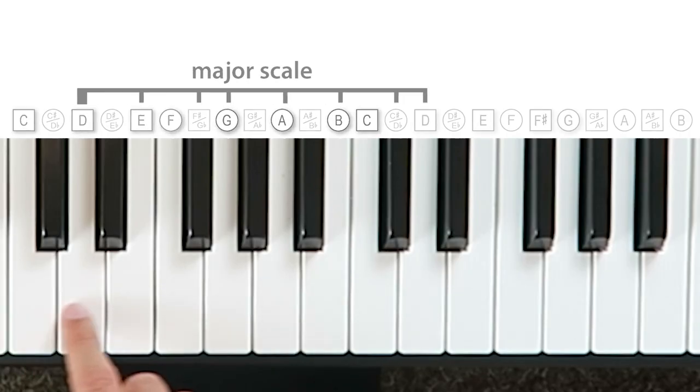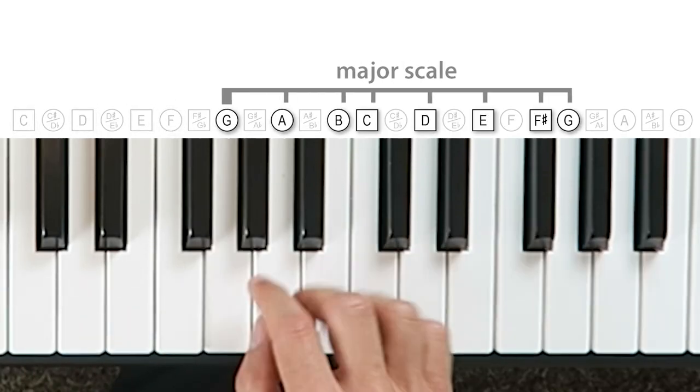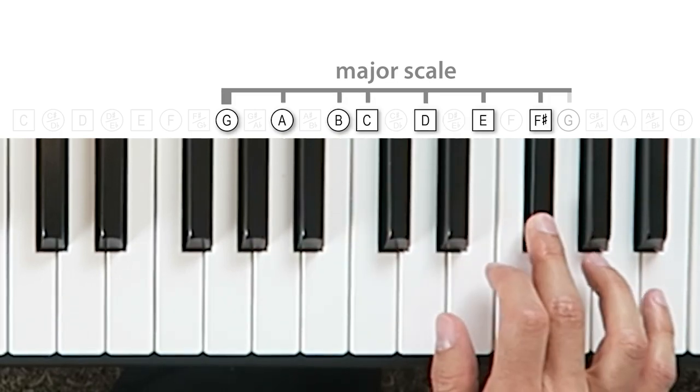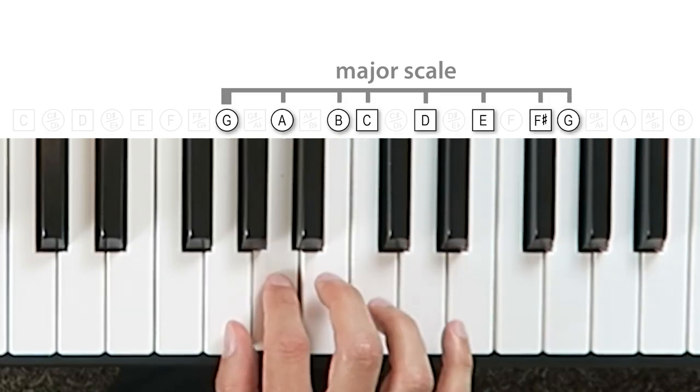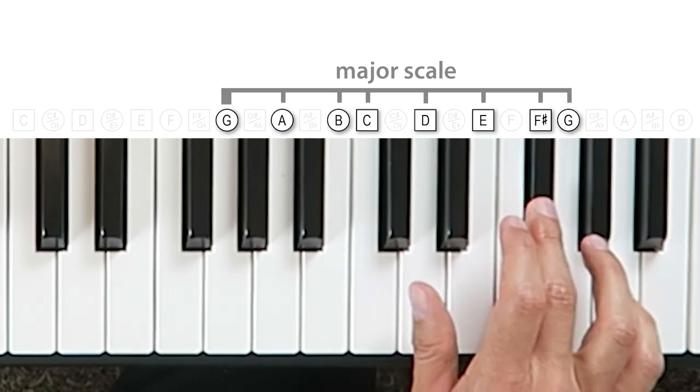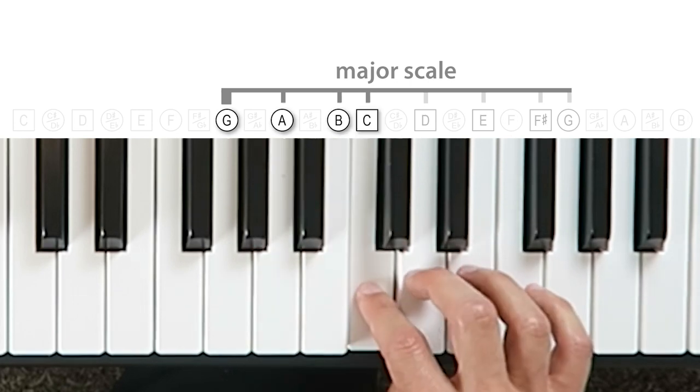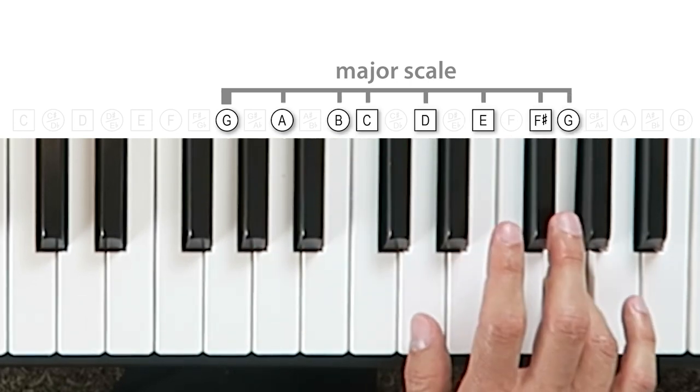And what's cool is we can play this same pattern of whole step and half step intervals starting on any note. So we can begin in a different place and it's still recognizable as a major scale. For example, start on G. G, whole step, whole step, half step, whole step, whole step, whole step, half step. Or G, A, B, C, D, E, F sharp, G. In UK English, that's tone, tone, semitone, tone, tone, tone, semitone. Now we need to play this black note to follow the pattern of whole steps or tones right here.